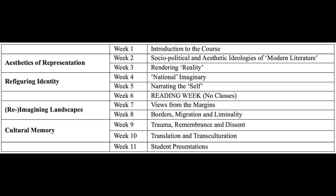These specific topics include socio-political and aesthetic ideologies of modern literature, rendering reality, national imaginary, narrating the self, views from the margins, borders migration and liminality, trauma remembrance and descent, and translation and transculturation.